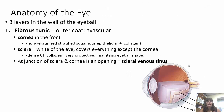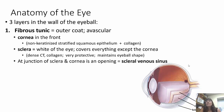The anatomy of the eye: there are three layers in the wall of the eyeball. The first is the fibrous tunic, the outer coat. It is avascular — no blood vessel innervation. The cornea is in the front, made of non-keratinized stratified squamous epithelium plus collagen, which you should associate with strength. The sclera is the white of the eye, covering everything except the cornea. It is dense connective tissue and collagen — very protective and it maintains the eyeball shape. At the junction of the sclera and cornea is an opening called the sclerovenous sinus.